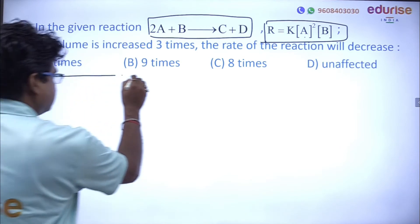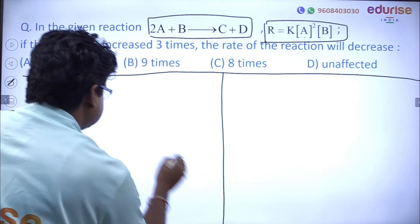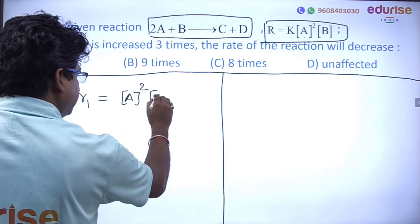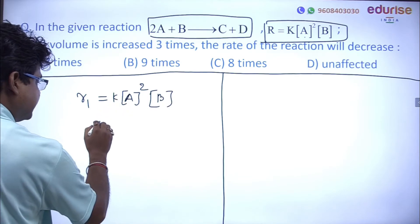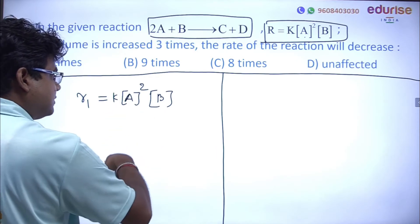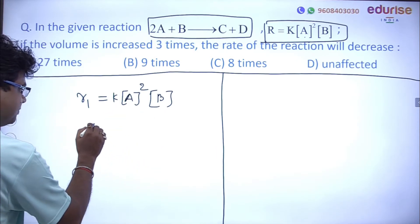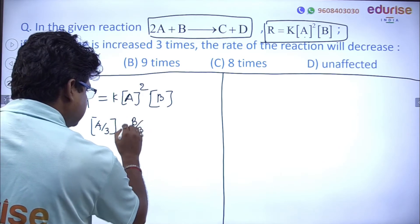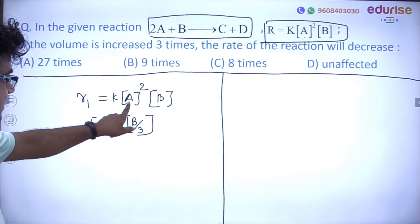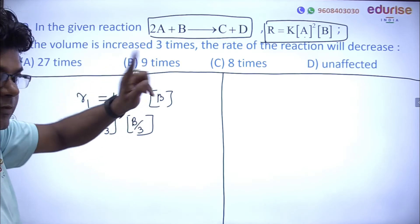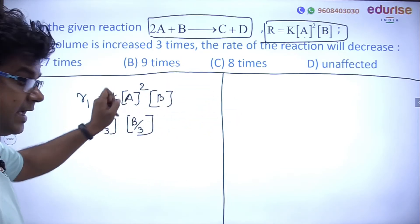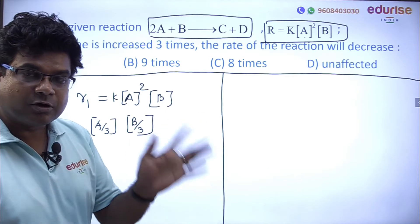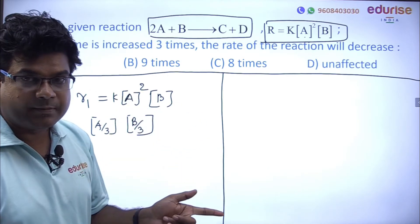The initial rate R₁ = k[A]²[B]. When volume is increased 3 times, concentration of A becomes A/3 and concentration of B becomes B/3. Molarity is defined as number of moles of solute per liter of solvent — if volume goes from 1 liter to 3 liters, concentrations become A/3 and B/3. The final rate R₂ = k(A/3)²(B/3) = k[A]²[B] / 27.